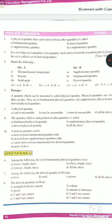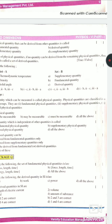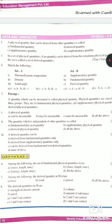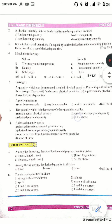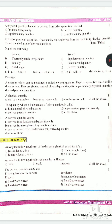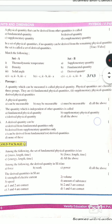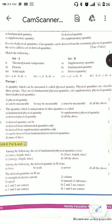A derived quantity can be derived from fundamental quantity as well as supplementary quantity. Next: Thermodynamic temperature is a fundamental quantity, so the answer is option D. Density is a derived physical quantity, so the answer is option C. A quantity which can be measured is called a physical quantity, and physical quantities are classified into three groups: fundamental, supplementary, and derived.